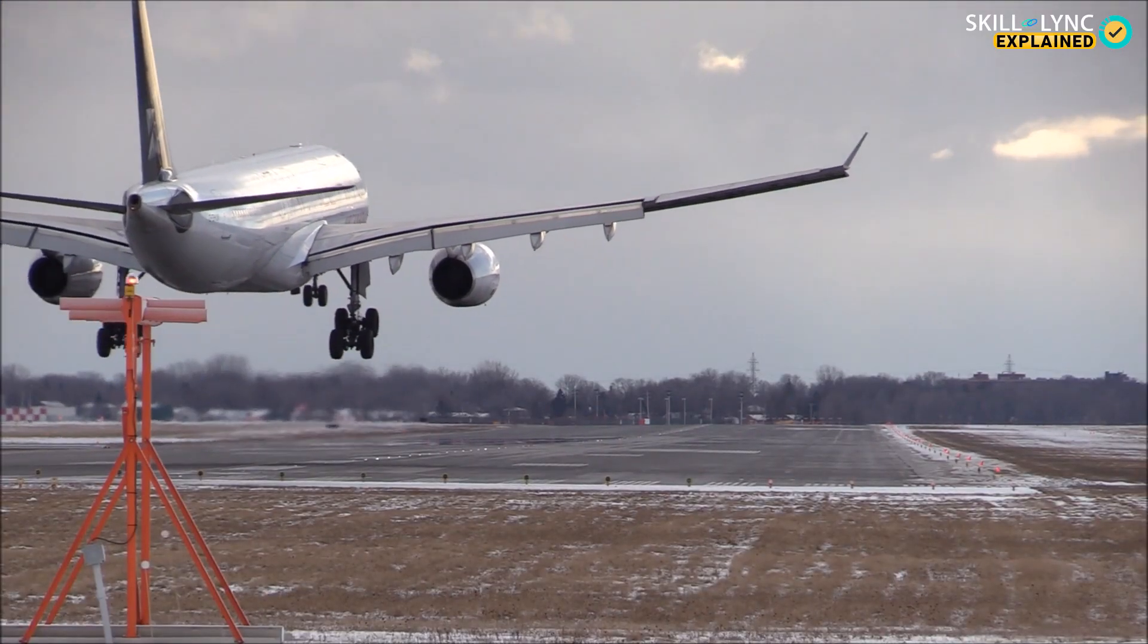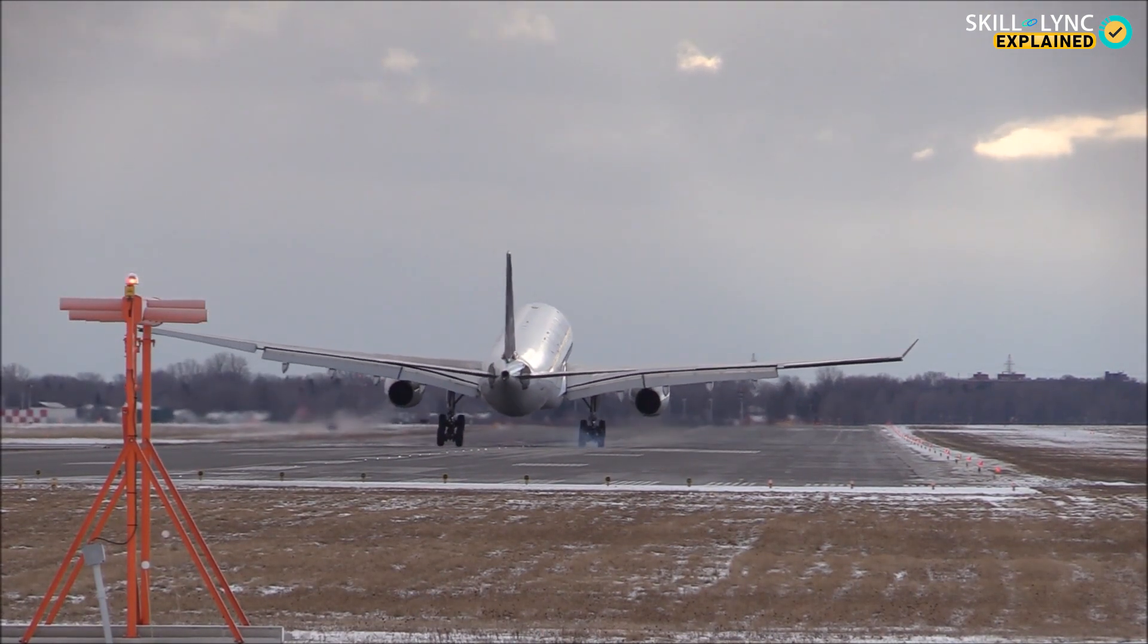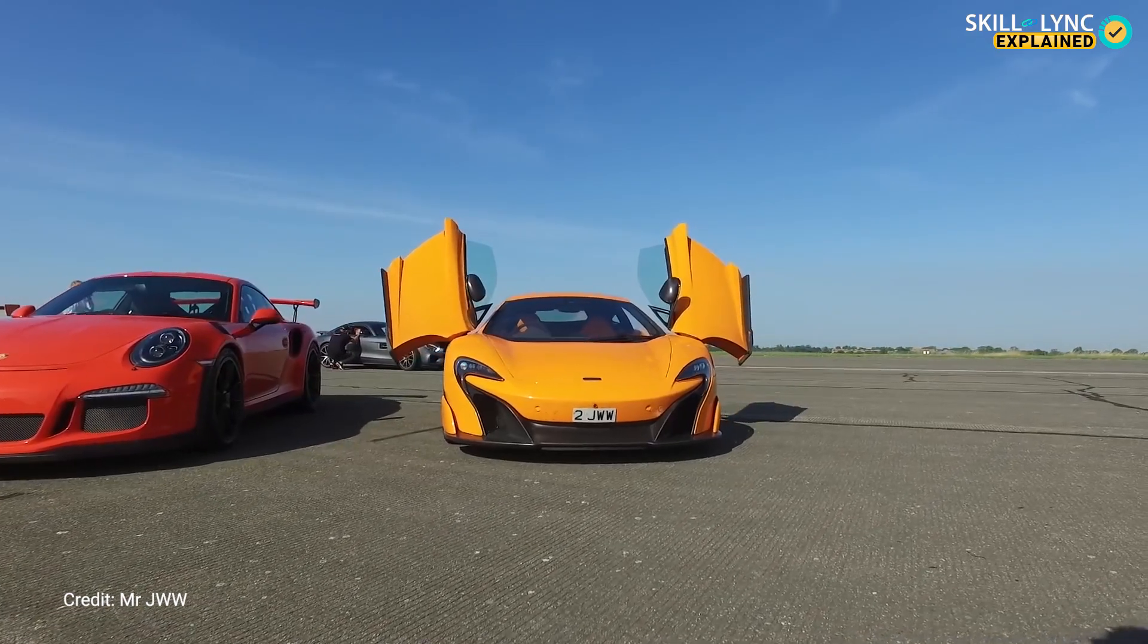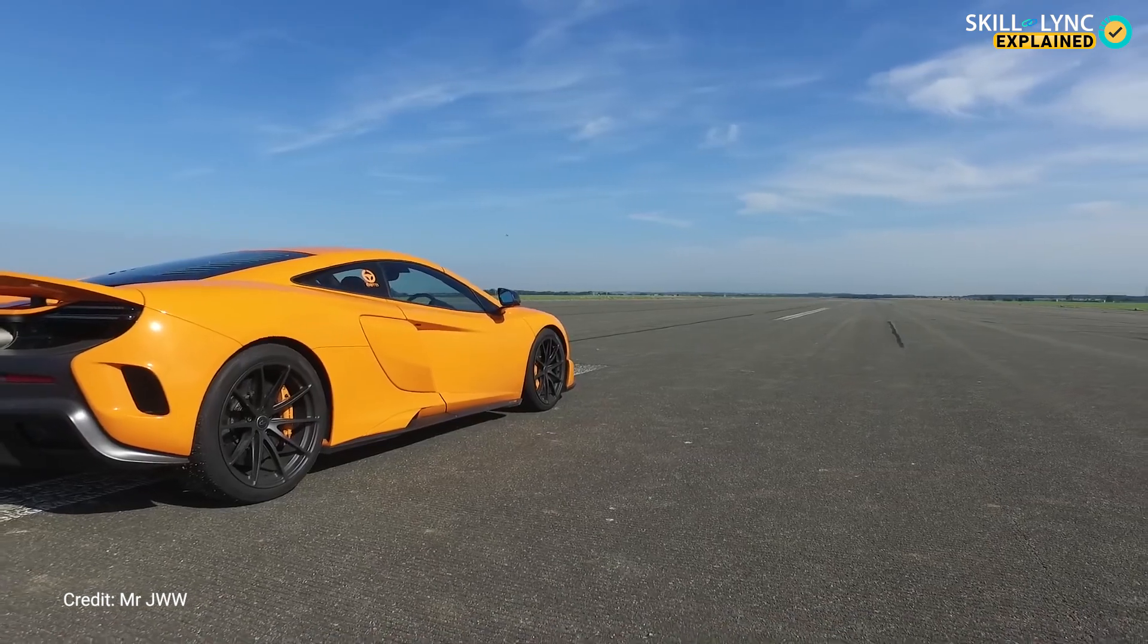These active wings can also have an added function of air brakes which are usually seen in aircrafts. But nowadays, many hypercars have similar active wings with air brake functions to have better control.